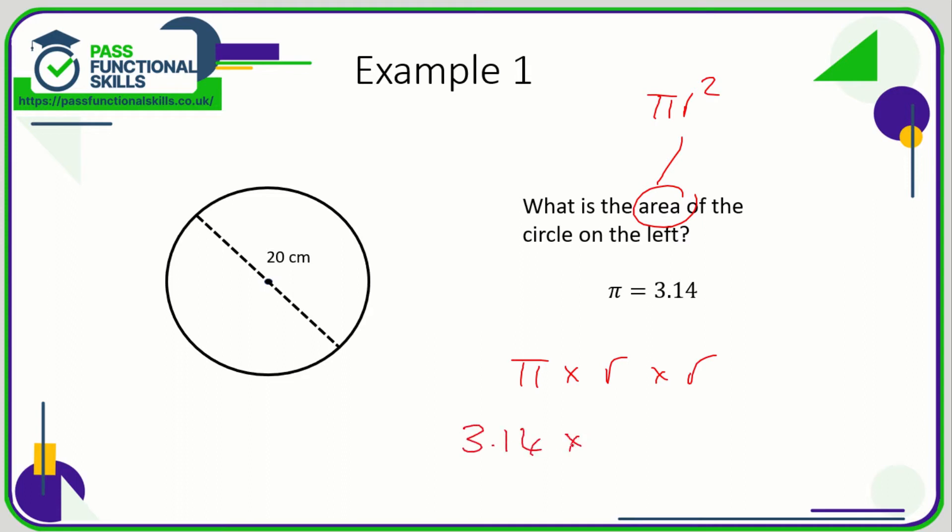That's going to be 3.14 multiplied by—now, 20 is the diameter, so if the diameter is 20, the radius is going to be half that, so the radius is 10. The calculation is 3.14 times 10 times 10.